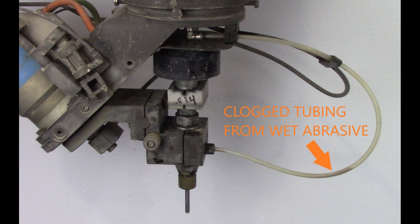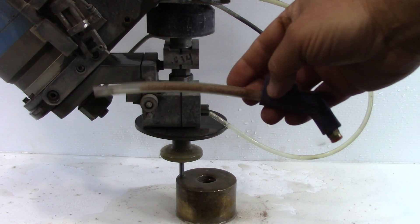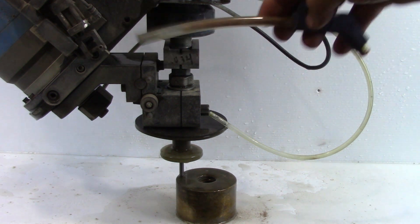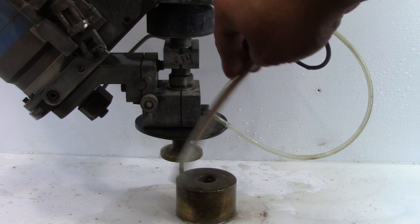An abrasive line clog is different from a clogged nozzle. An abrasive clog could occur when moisture contaminates the dry abrasive before it is mixed with the ultra-high-pressure water stream.